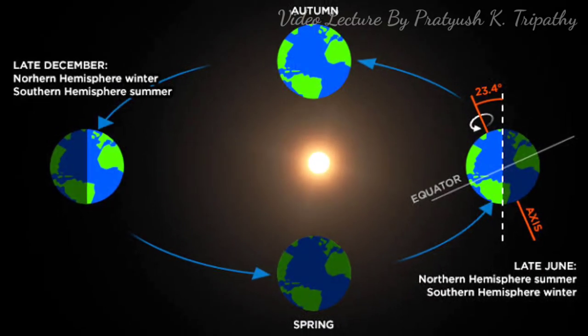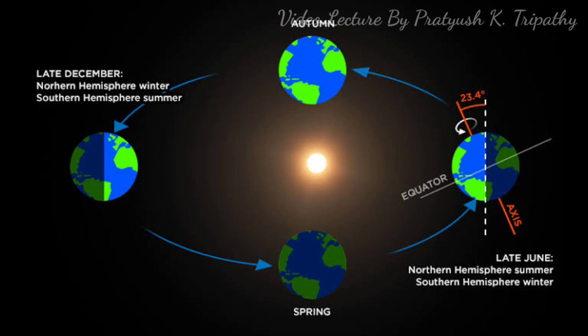The Earth completes one revolution on its elliptical orbit in 365 1 by 4 days. Because of the inclination of the axis and the fact that its north pole is always directed to the pole star, the Earth experiences variation in temperature and in the length of the day and night, which affects the main season throughout the year.